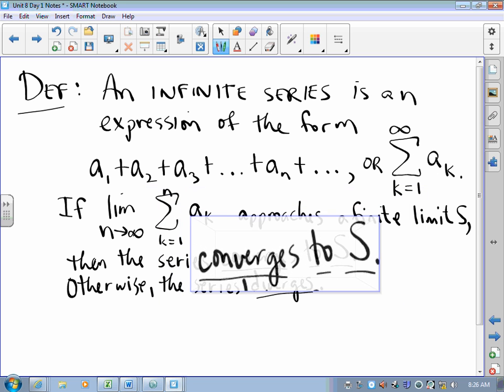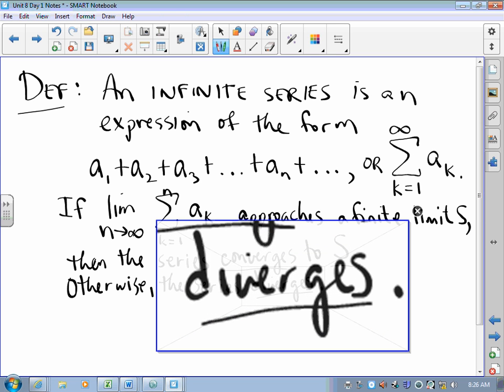But if you start taking a look at those partial sums. First term, first two, first three, first n. And you see that those sums do not settle down. They're getting bigger and bigger and bigger. Or they're bouncing back and forth. Or they're doing just crazy stuff. Then we see that the series diverges.